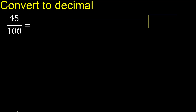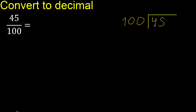45 divided by 1000. 45 is less, therefore complete — always complete with 0. Here: 0 point.